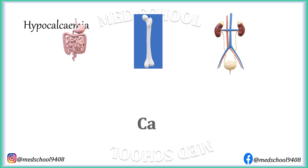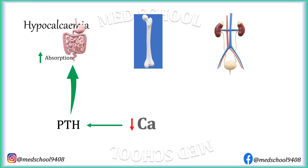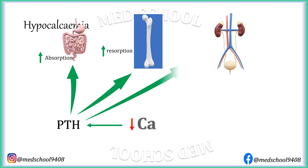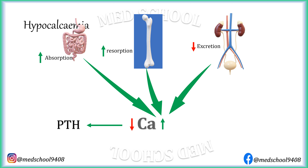Let's first understand calcium metabolism. When calcium level falls, it induces parathyroid hormone release from the parathyroid gland, which increases absorption of calcium through the intestine, increases bone resorption and mobilizes calcium from bones to blood, and decreases excretion of calcium through kidneys. All these processes lead to an increase in calcium level.